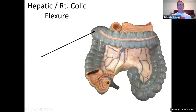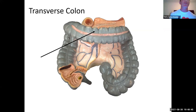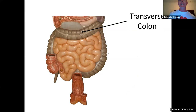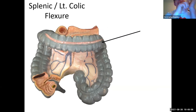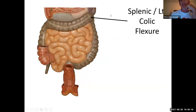Now the large intestine goes from the right side of your body over to the left — we call that part the transverse colon. It crosses the midline of your body from right to left. Then it encounters another bend called the splenic flexure or the left colic flexure. We call it the splenic flexure because right here is the spleen — it's in close proximity to the spleen.